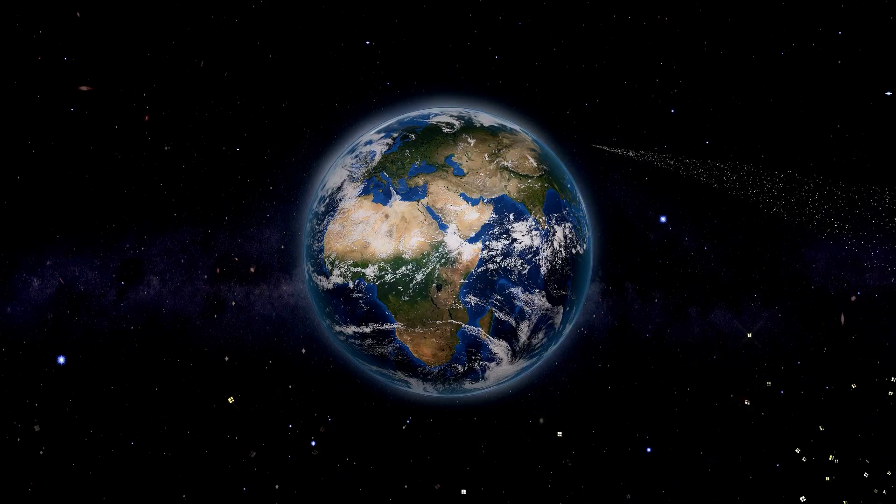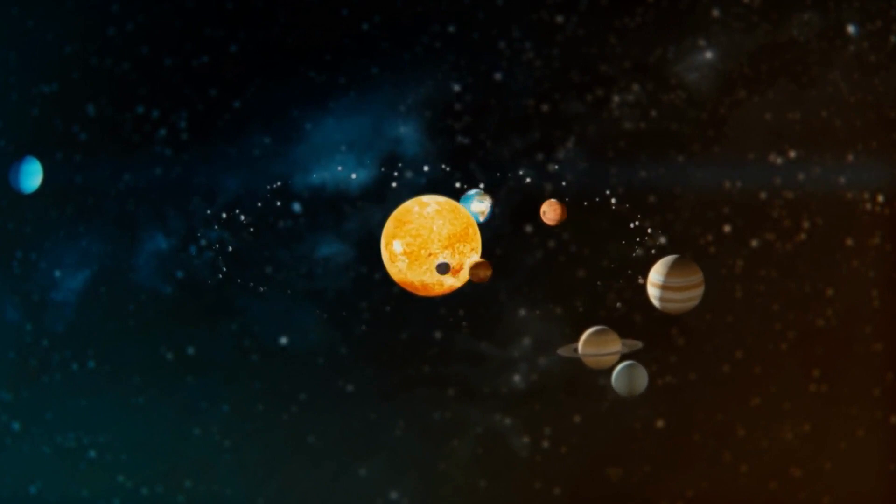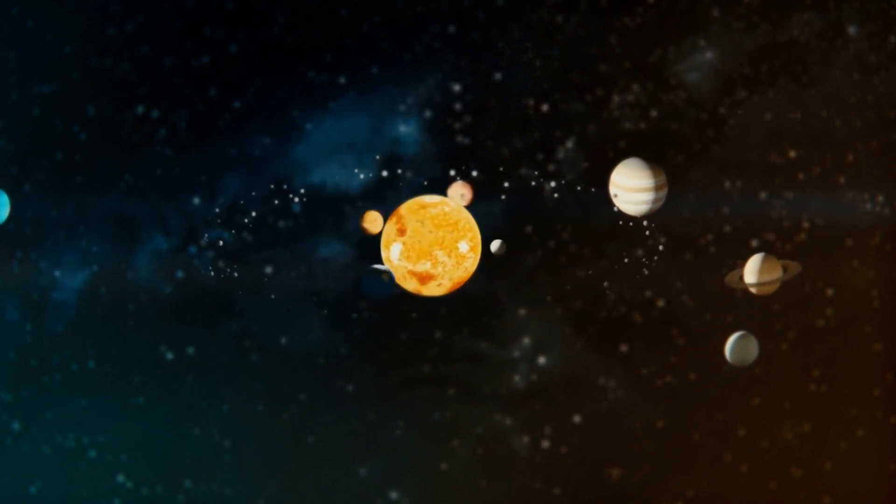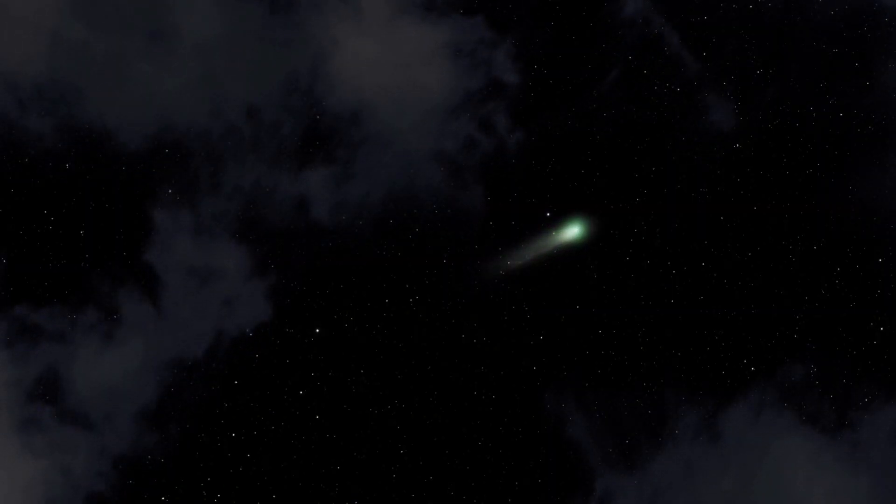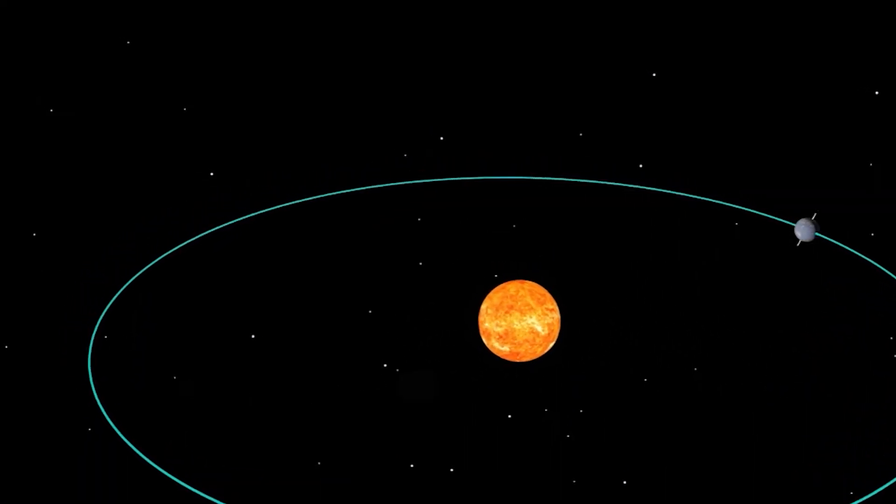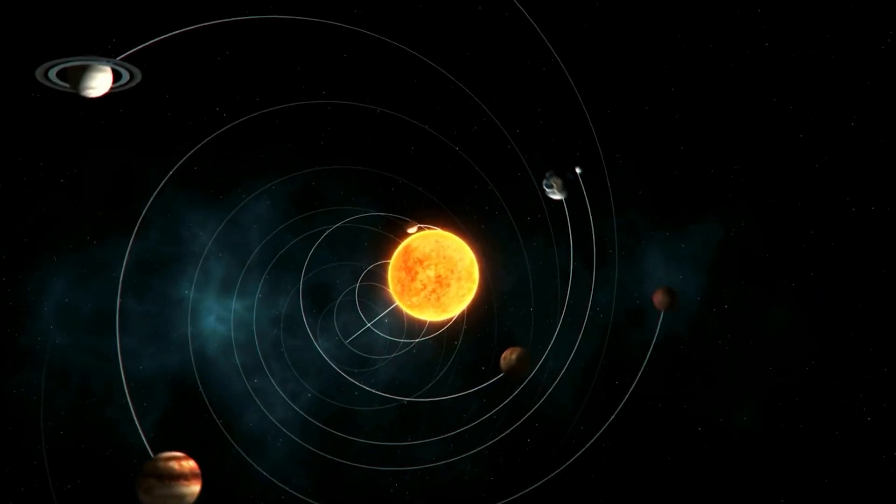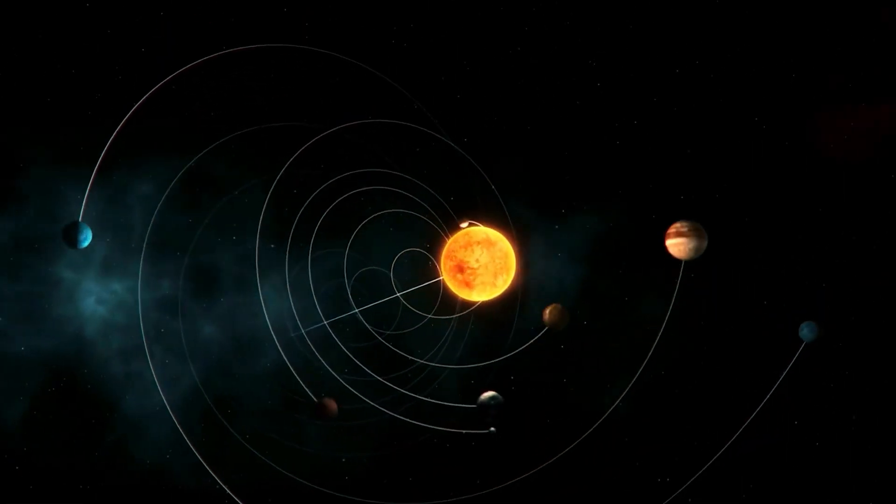The comet's orbit appears rather unusual. It surprised us by arriving from the southern direction near the Sun, which could be why it wasn't spotted earlier this summer. Comet P-1 Nishimura is traversing a retrograde trajectory that is tilted around 129 degrees compared to the flat path of the planet's orbits, known as the ecliptic. This means it's moving in the opposite direction to the inner planets in our solar system.